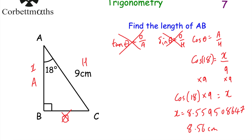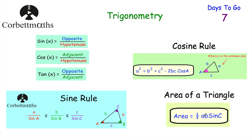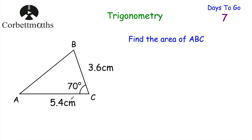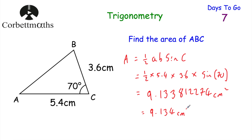Next question: find the area of triangle ABC. We have two sides and the included angle, so we use area = half ab sine C. Area equals half × 5.4 × 3.6 × sine 70°, which equals 9.134 centimetres squared to three decimal places. Well done if you got that.